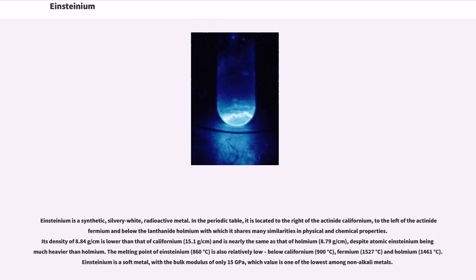Einsteinium is a synthetic, silvery white, radioactive metal. In the periodic table, it is located to the right of the actinide californium, to the left of the actinide fermium and below the lanthanide holmium with which it shares many similarities in physical and chemical properties. Its density of 8.84 grams per cubic centimeter is lower than that of californium, 15.1 grams per cubic centimeter, and is nearly the same as that of holmium, 8.79 grams per cubic centimeter, despite atomic Einsteinium being much heavier than holmium.